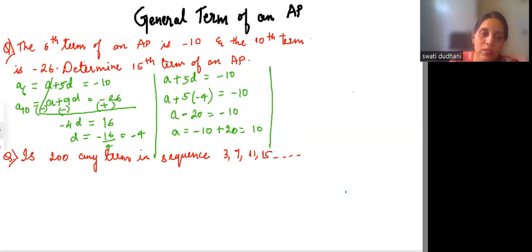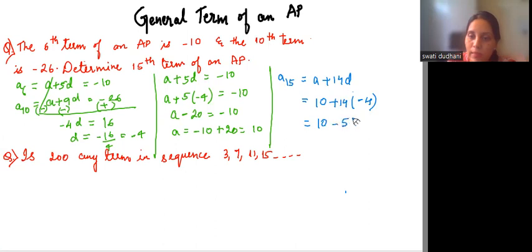Now the question is we need to find the 15th term of an AP. So 15th term formula would be A plus 14D. Since we have A and D values we can just substitute. So A is 10 plus 14 into D is minus 4. So 10 plus into minus is minus 56 which will give us minus 46. So the 15th term is minus 46. Now coming to the next question.